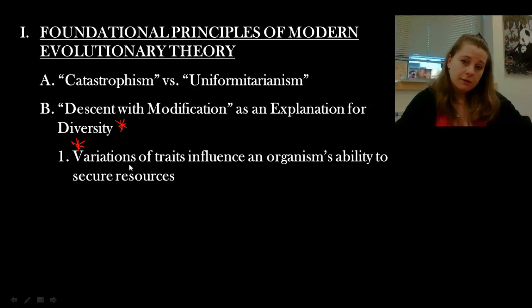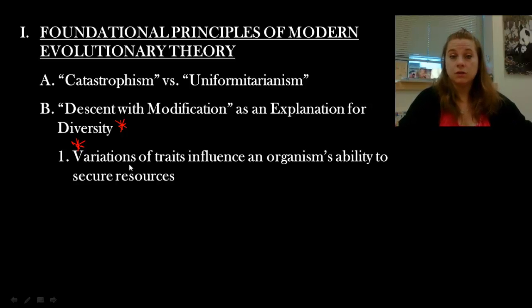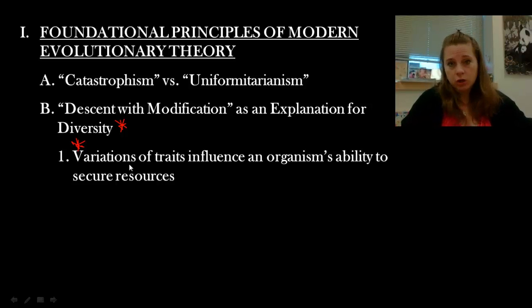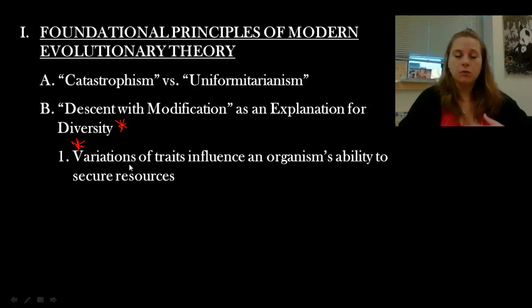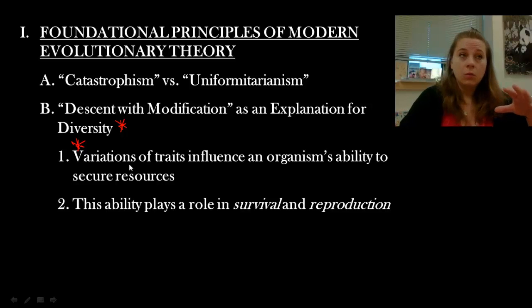So I just want to make sure we're clear on that distinction. In terms of explaining diversity, this idea of generation to generation with slight shifts — the variations of these traits are going to influence the organism's ability to secure resources. How well can you get food? How well can you find space, shelter? The ability to secure resources really plays a role in how well a particular organism can survive, and if they can survive, then they can reproduce.